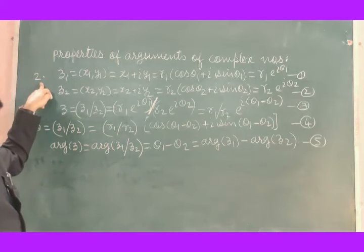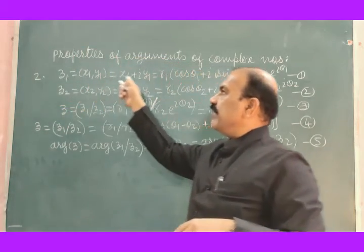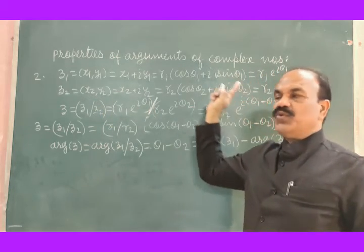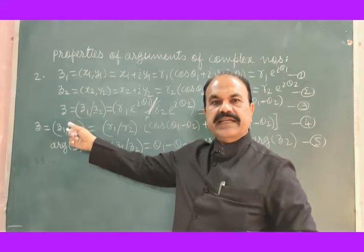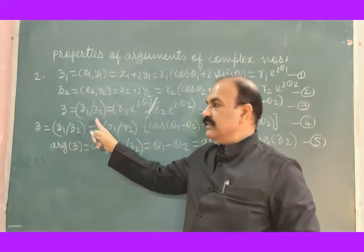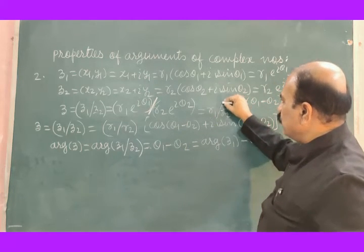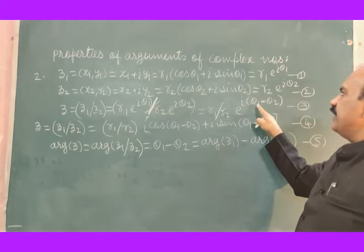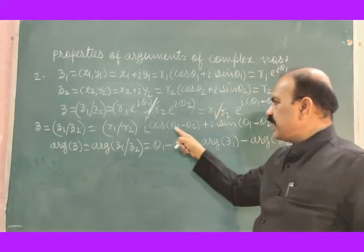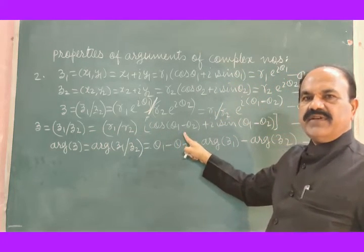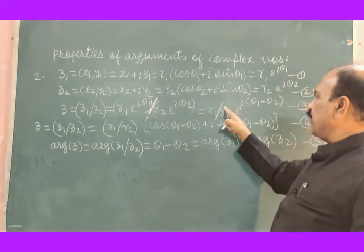To study the second property of arguments, we considered two complex numbers Z1 (equation 1) and Z2 (equation 2) in all forms. We then performed the division: Z equals Z1 divided by Z2, which equals R1 divided by R2 into e to the power i(θ1 minus θ2).